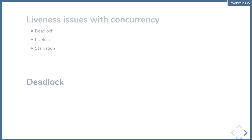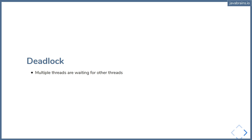So what is deadlock? Deadlock is basically where you have at least two threads which are waiting for other threads, but the other thread is also waiting for something else, which results in this mutual waiting. This is what causes a deadlock — there are multiple threads waiting for other threads, and the dependency is somehow circular. So let's say thread A is waiting for thread B and thread B is waiting for thread A — then you have a deadlock.